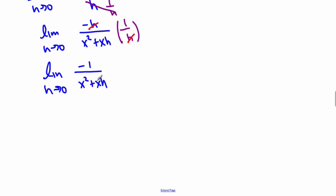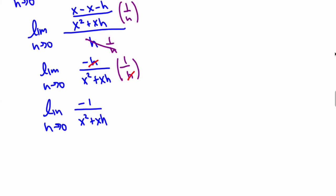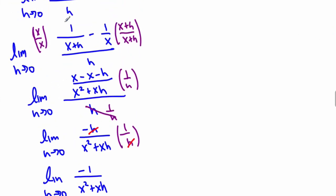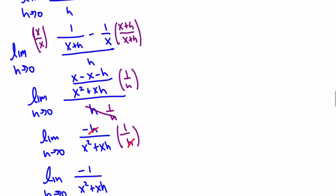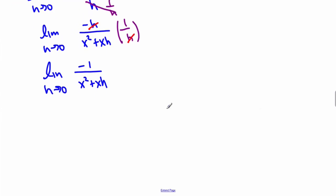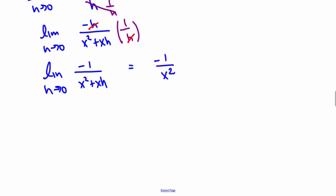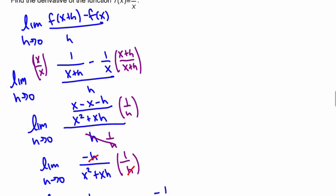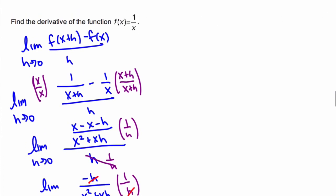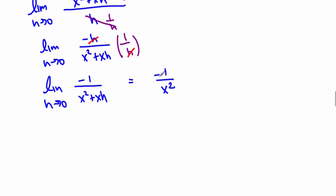Now we can substitute in h as 0 because before, like always, you can't substitute it in right from the start because you'll be dividing by 0, which we cannot do. So now let's substitute in 0, and we're left with negative 1 over x squared, which means the derivative of 1 over x is negative 1 over x squared.